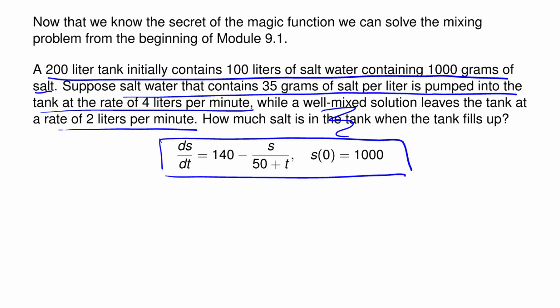Before applying the method of the magic function, let me determine the time at which the tank fills up. We have a 200-liter tank initially containing 100 liters, with salty water entering at 4 liters per minute and well-mixed solution leaving at 2 liters per minute. The net increase is 2 liters per minute, so we need 100 liters added, meaning the tank fills up at t = 50 minutes.